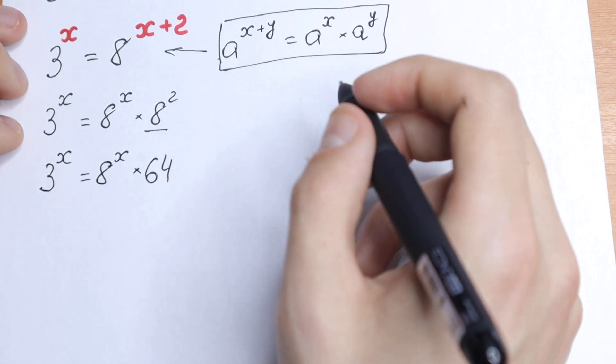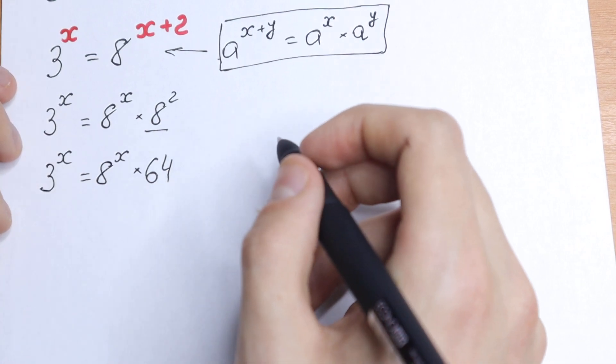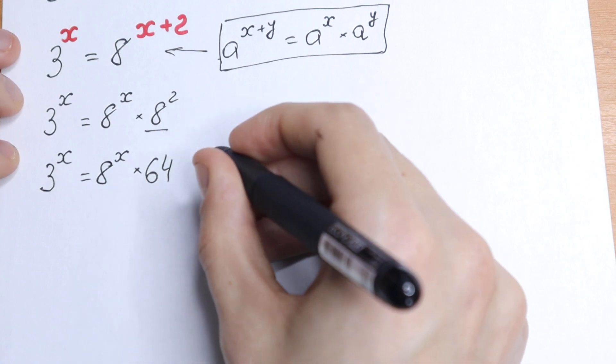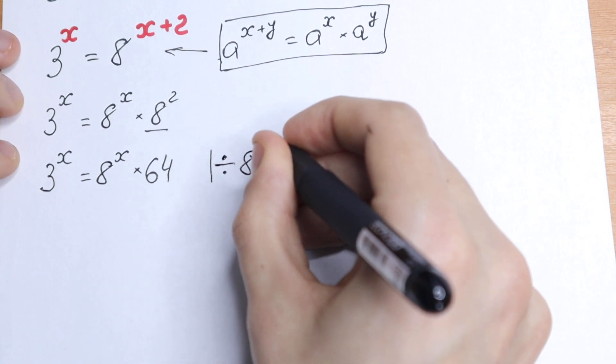What are we going to do in our case? The main rule to solve this kind of equation is to divide both sides by, for example, 3 to the power x or 8 to the power x. So let's do this.